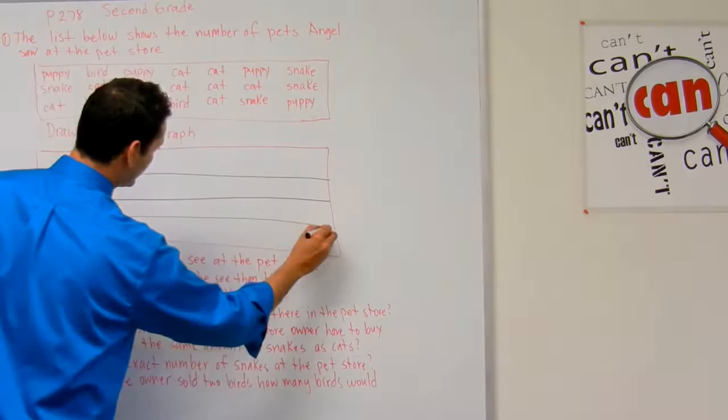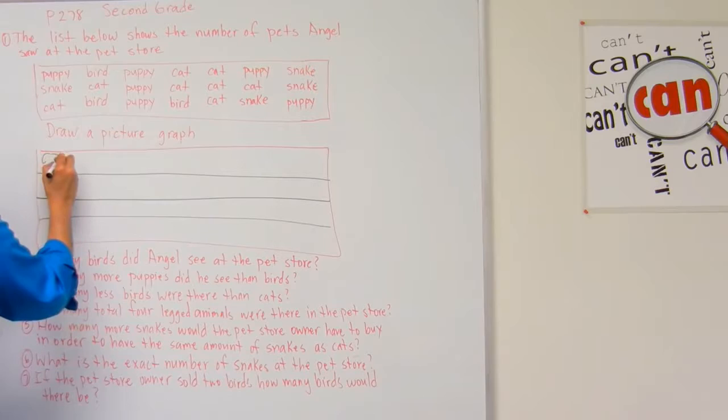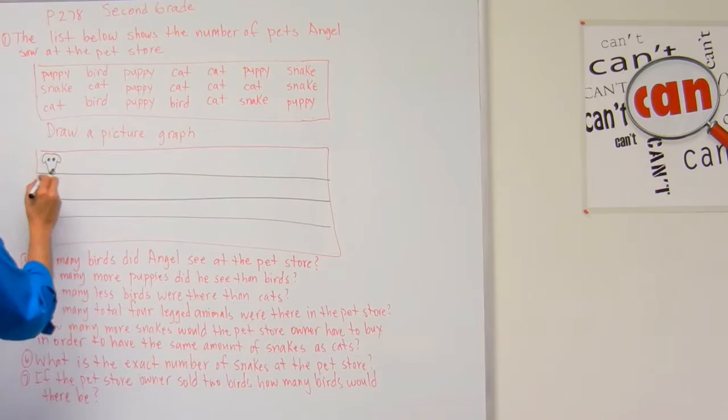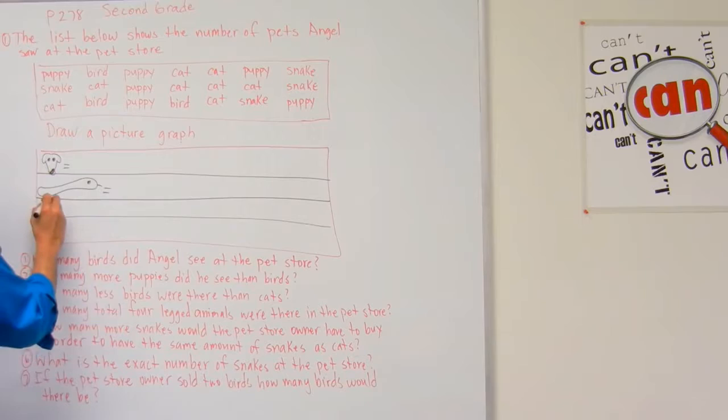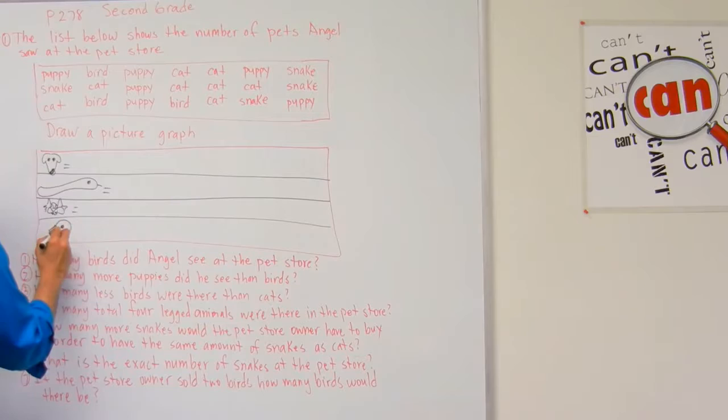So now I've got one, two, three, four rows. I have a puppy, so I'm going to go ahead and draw a picture of a puppy right there. Then I'm going to go ahead and draw a snake, then draw a cat, and finally I'm going to go ahead and draw a bird.